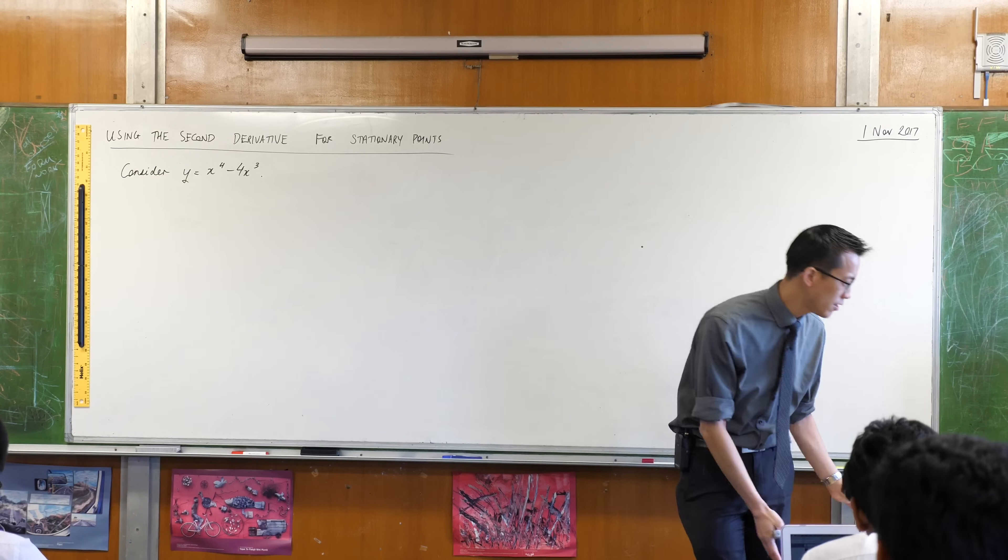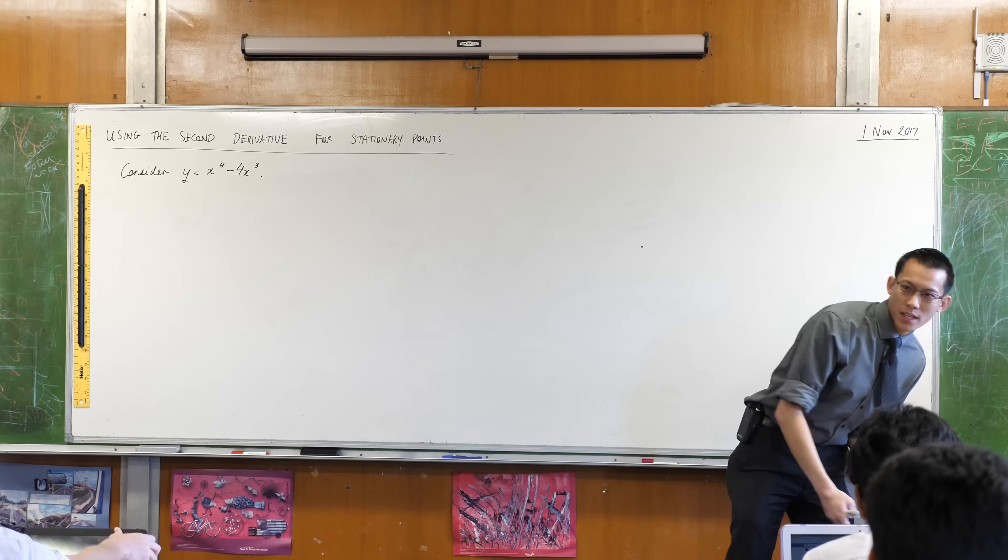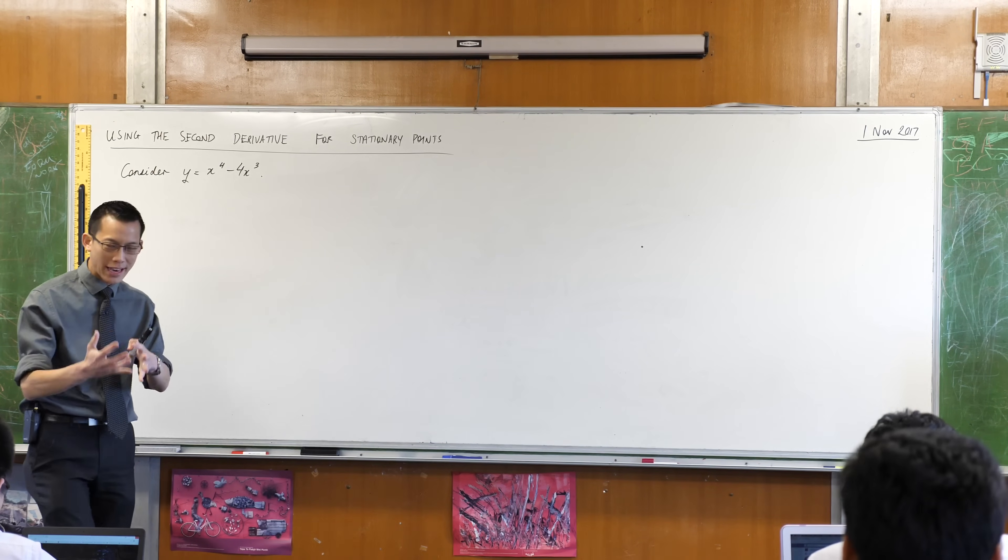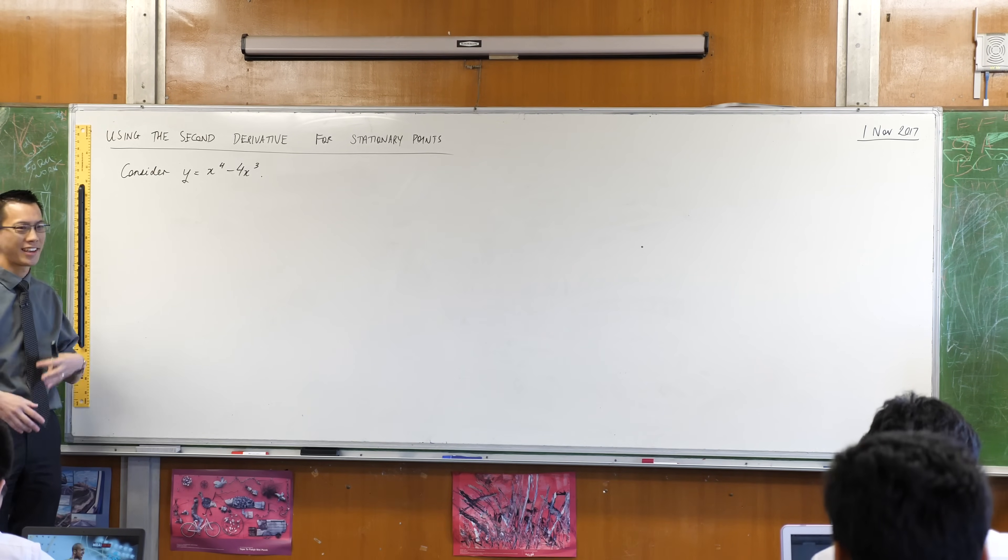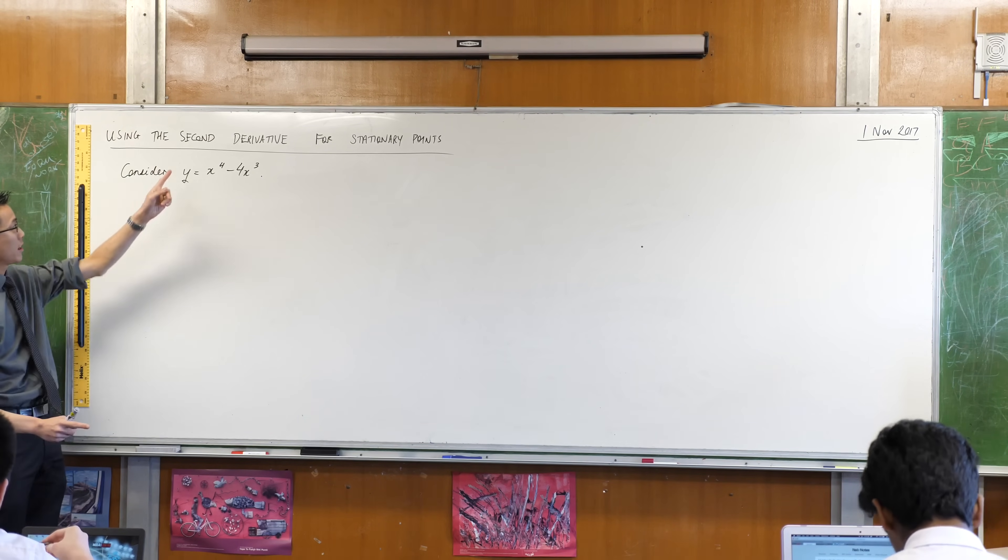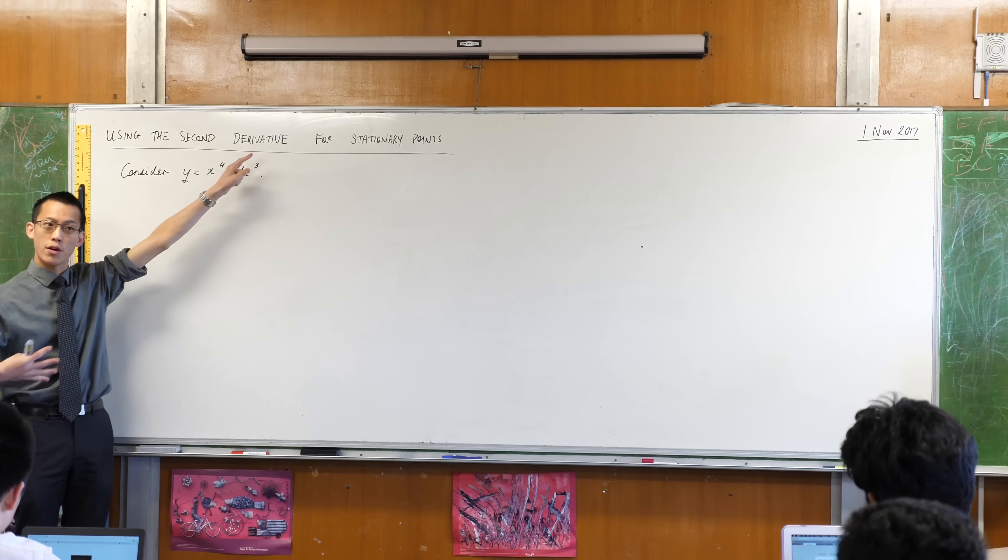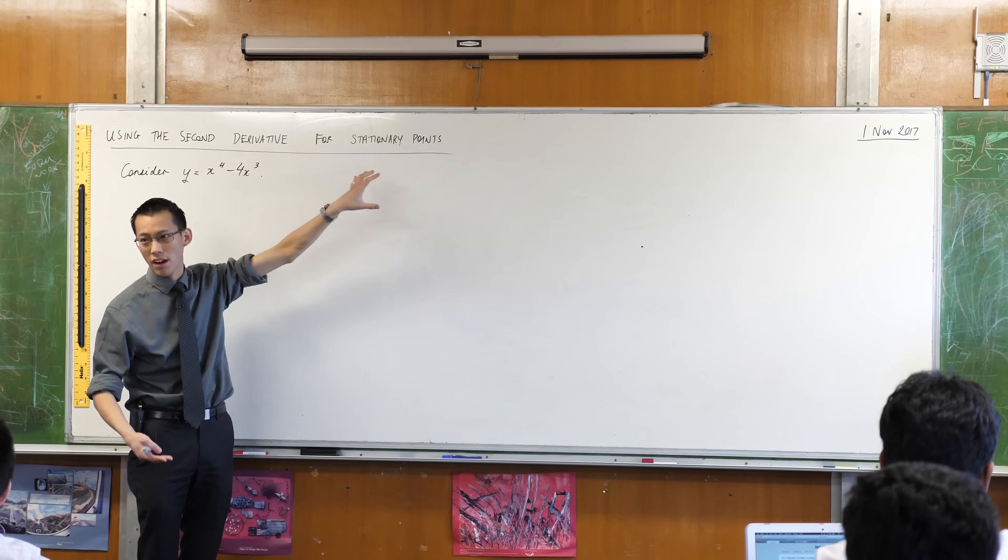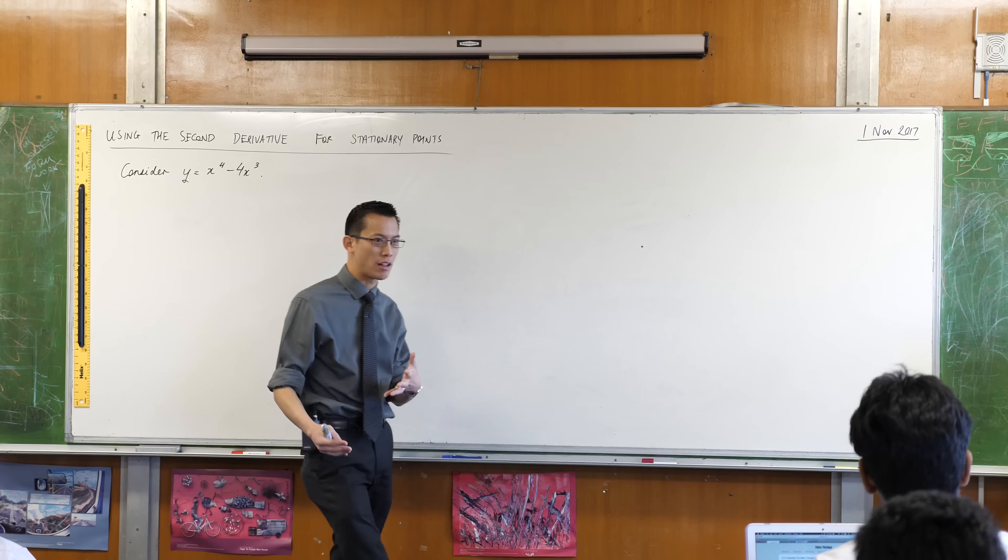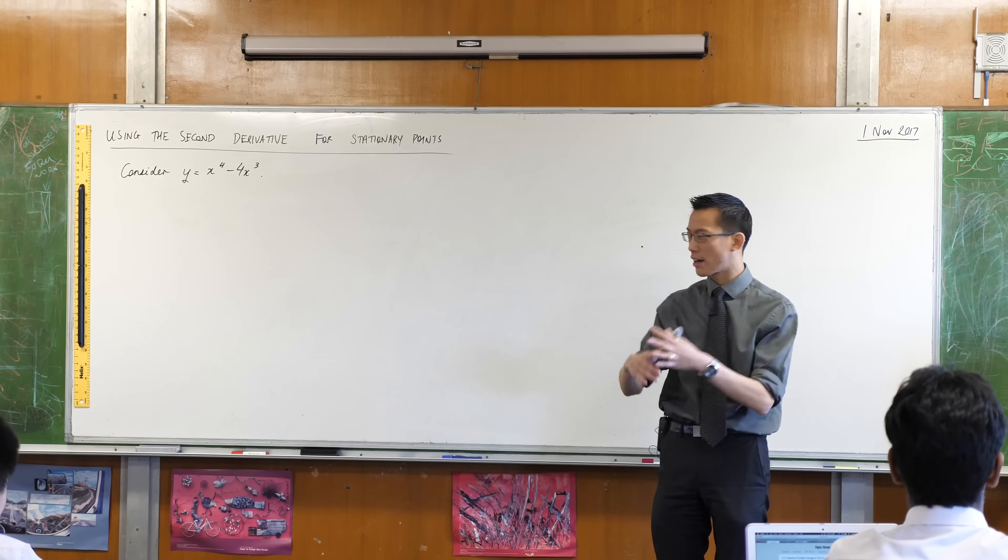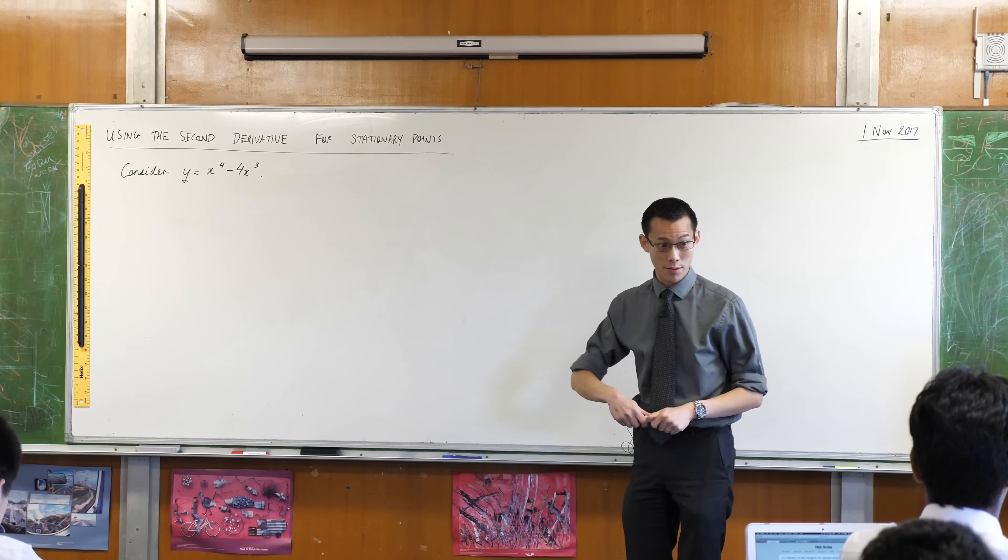Right, you've hopefully made the heading already. We are in this topic of geometrical applications of differential calculus, getting better at saying that tongue twister, which is all about using derivatives, using this process of differentiation to understand, as the name suggests, the geometry of a curve. What's the shape look like? What can we know about where these things go up and down based on what we know of the derivatives?